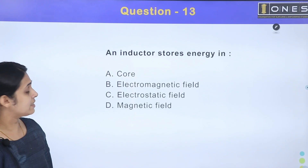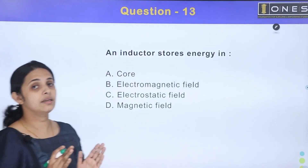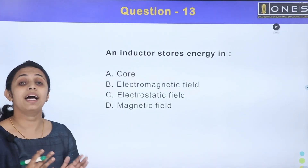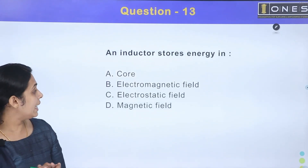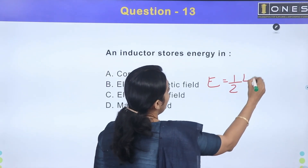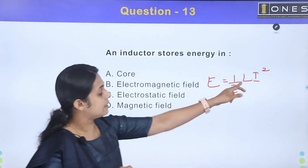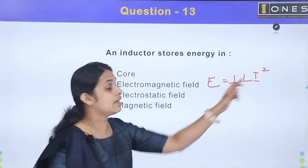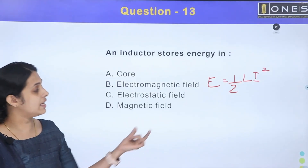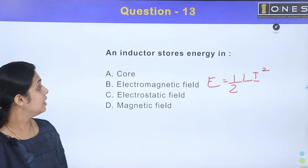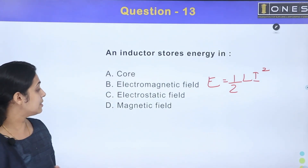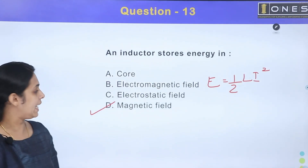Inductor stores energy. When current flows, the inductor stores energy. The energy stored in an inductor is in the form of a magnetic field. The energy stored is given by E equals half LI², where L is the self-inductance and I is the current through the coil. The answer is Option D — magnetic field.